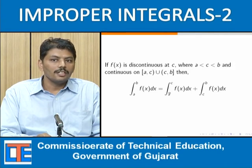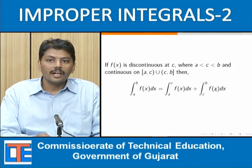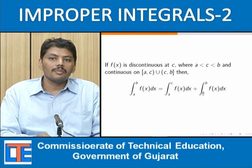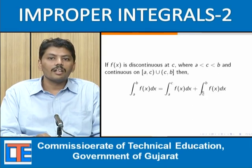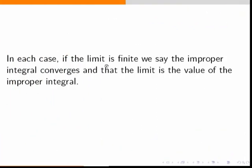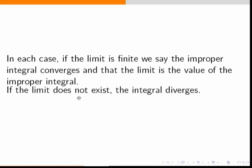At point c there is a discontinuity, so we evaluate ∫ₐᶜ f(x) dx and ∫ᶜᵇ f(x) dx separately using the appropriate limit. In each case, if the limit is finite we say the improper integral converges and the limit is the value of the integral; if the limit does not exist, the integral diverges.